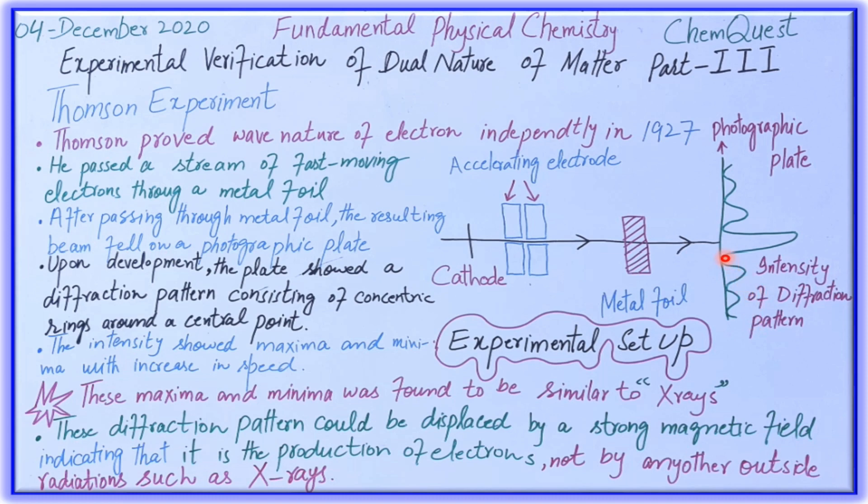Now, the intensity of diffraction pattern has maxima and minima. As the speed of electron increases, the difference between maxima and minima increases. You can see that as we go further, there is minimum, then maximum, then minimum, then maximum, and the difference increases. With decrease in speed of the electronic beam, you see here we obtain minima, then maxima, then minima, then maxima, and so on.